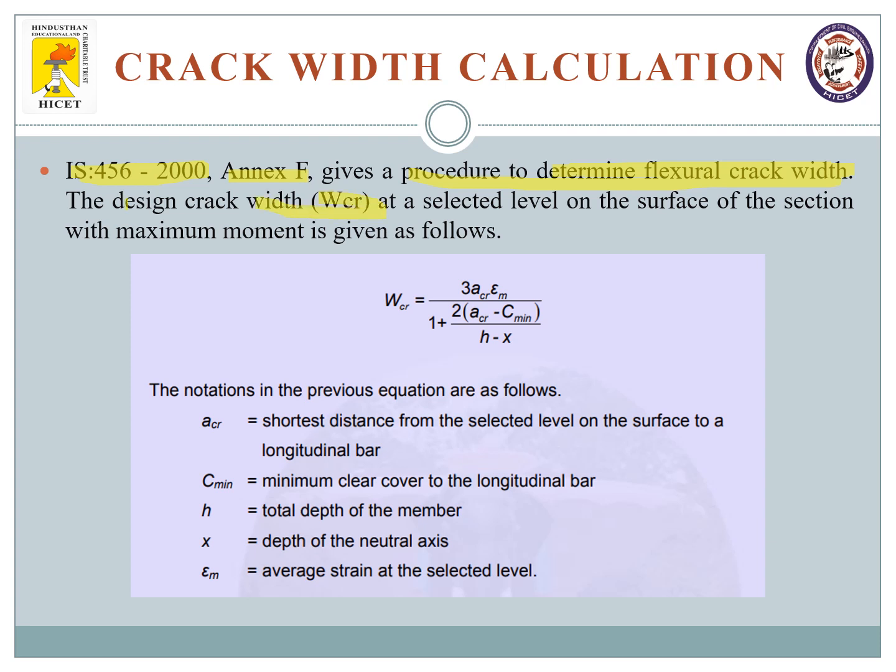The design crack width WCR at a selected level on the surface of the section with maximum moment is given by the formula where WCR equals 3 times ACR times epsilon M times (1 plus 2(ACR minus C minimum) divided by (h minus x)) divided by (d minus x).